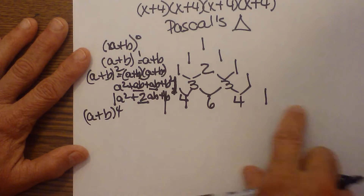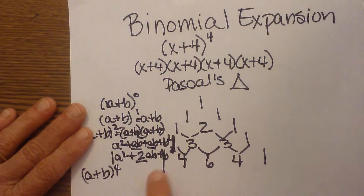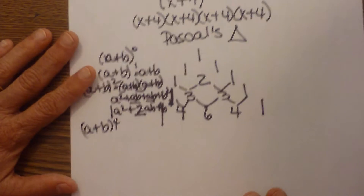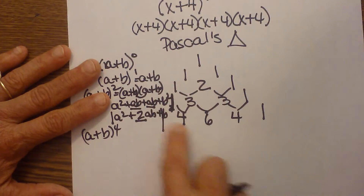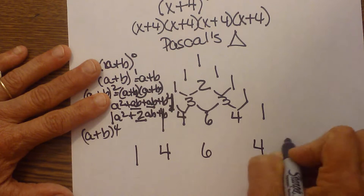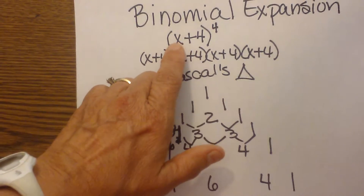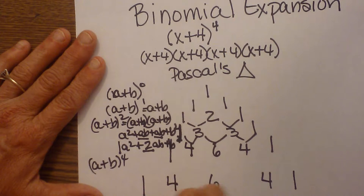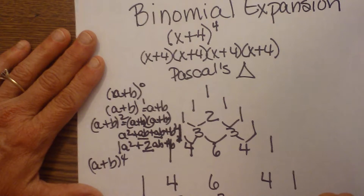I've created the fourth layer, which corresponds to the problem I started with. Those are my coefficients: 1, 4, 6, 4, and 1. Now for x plus four to the fourth power, I take the first term x and raise it to descending powers: x to the fourth, x to the third, x to the second, x to the first, and x to the zero.